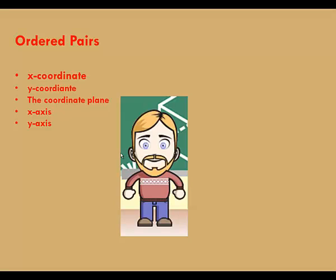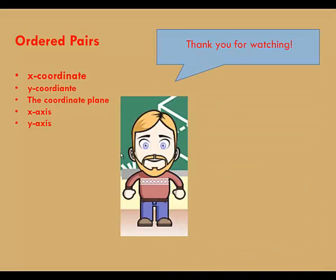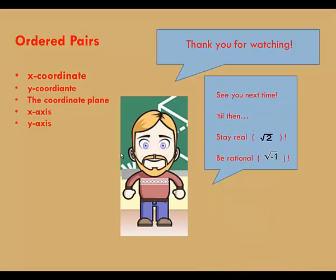So there you have it. A little review on ordered pairs. We looked at the x-coordinate, y-coordinates, the coordinate plane, the x-axis, the y-axis, and the origin. Thanks for watching. Have a great day. Until next time, stay real and be rational.